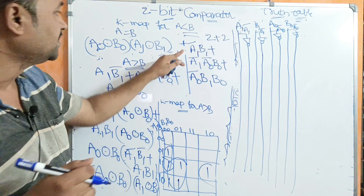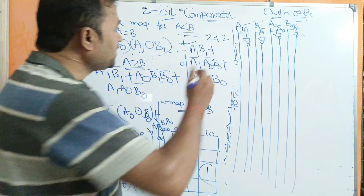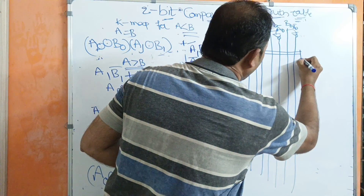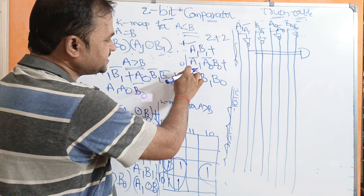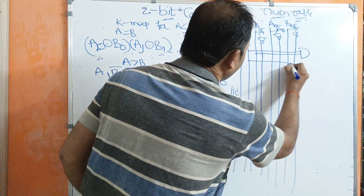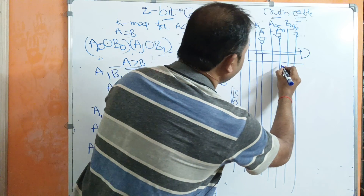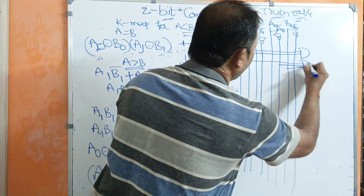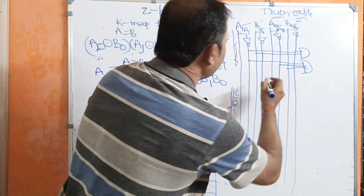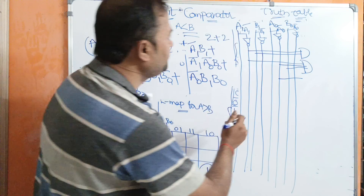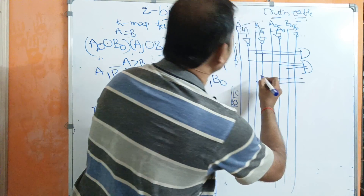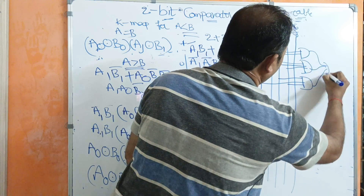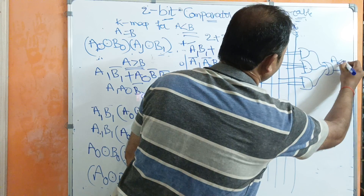For A less than B, the expression is A1_bar · B1 + A1_bar · A0_bar · B0 + A0_bar · B1 · B0. We take the A1_bar line and the B1 line and perform an AND operation. Then we take A1_bar, A0_bar, and B0 and perform an AND operation. Next we take A0_bar, B1, and B0 and perform another AND operation. Finally, we perform an OR operation on these three AND terms to produce the A less than B output.